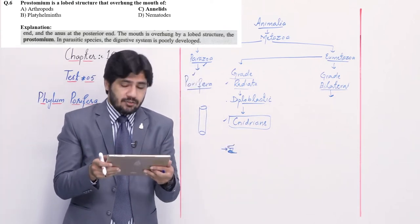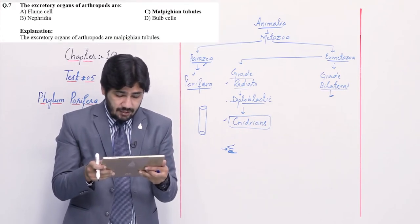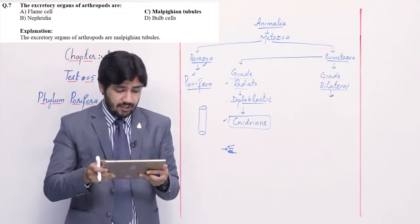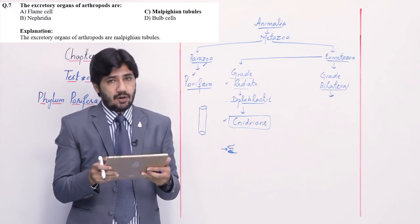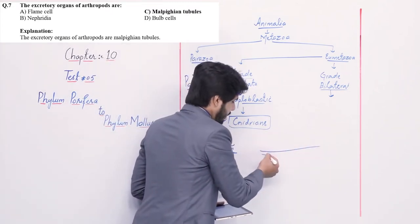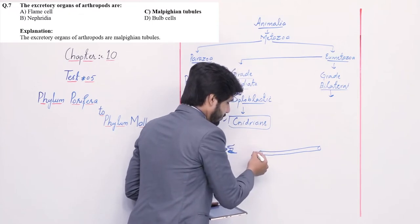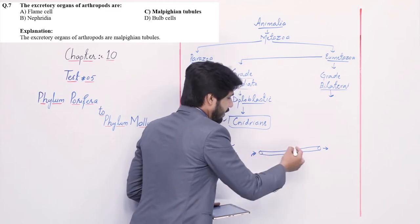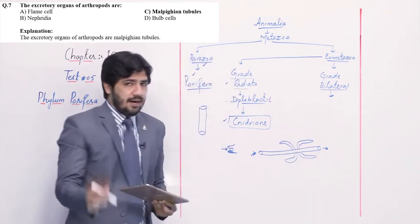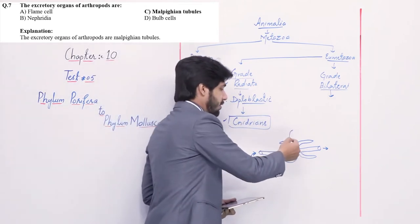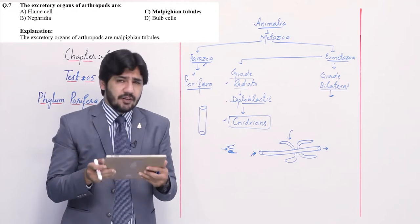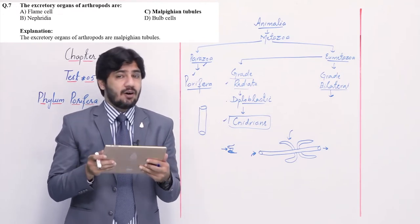Question number 7: the excretory organ of arthropods is — alpha flame cells, beta nephridia, charlie Malpighian tubules, and delta blood cells. In cockroach, the alimentary canal has tube-like structures where Malpighian tubules are attached. These tubules add excretory waste from blood into the intestine. Right option is charlie — Malpighian tubules. Flame cells are found within Platyhelminthes. Nephridia tubes perform excretion in different animals.